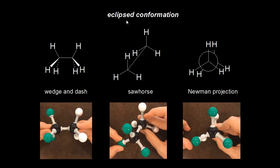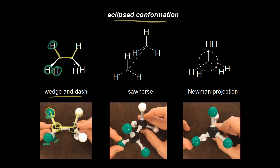Now let's look at the other important conformation of ethane, which is the eclipsed conformation, starting with the wedge and dash drawing. We have a hydrogen, a carbon, a carbon, and a hydrogen all in the same plane, so those bonds are drawn as straight lines. For the carbon on the left, we have a hydrogen in green coming out at us, a hydrogen in green going away from us, and a hydrogen in the plane of the page. For the hydrogens in white, one is in the plane of the page, one is coming out at us in space, and one is going away from us in space.